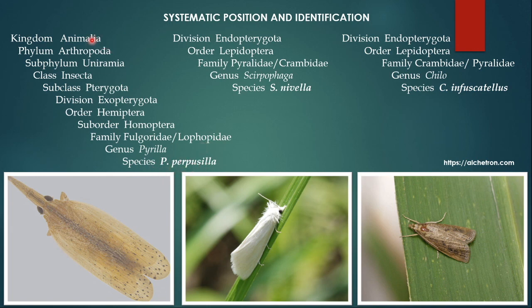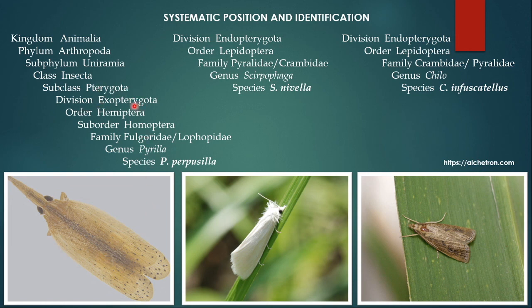Please remember that up to subclass Pterygota, all insects in your syllabus will have the same systematic position. Till subclass everything will be same, but from division it will change. If the insect has a nymphal stage in its life cycle, then it develops its wing buds externally, and in that case they belong to division Exopterygota.